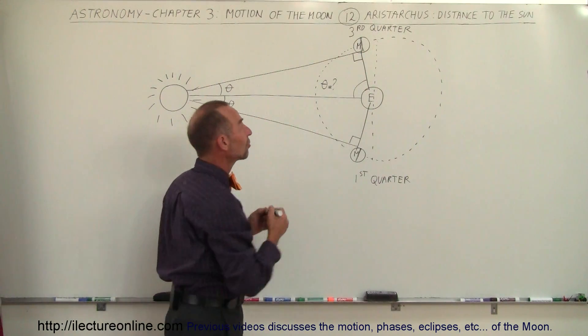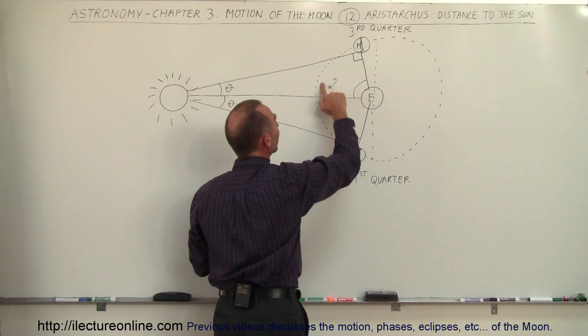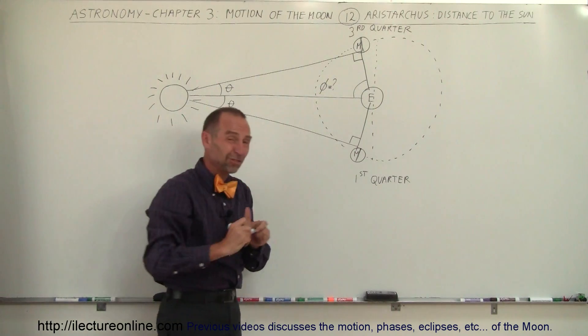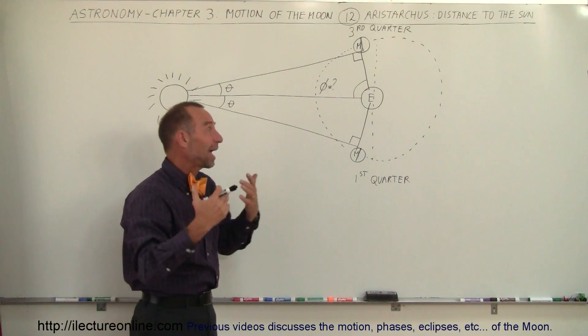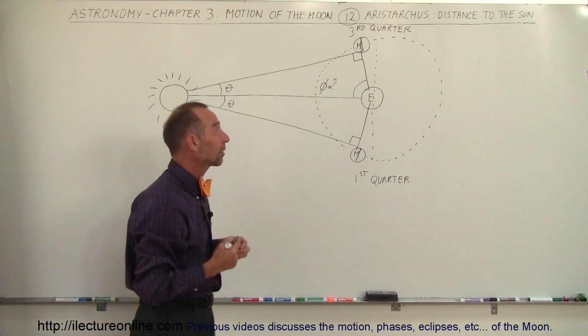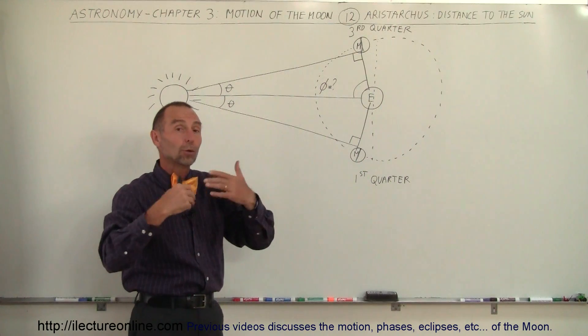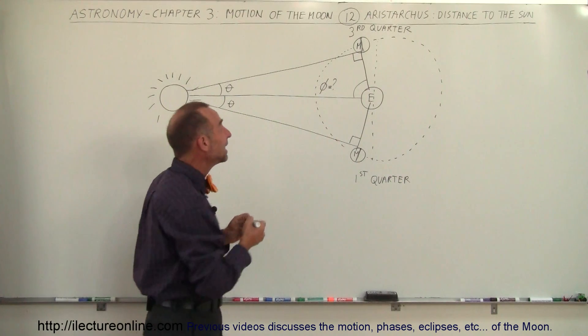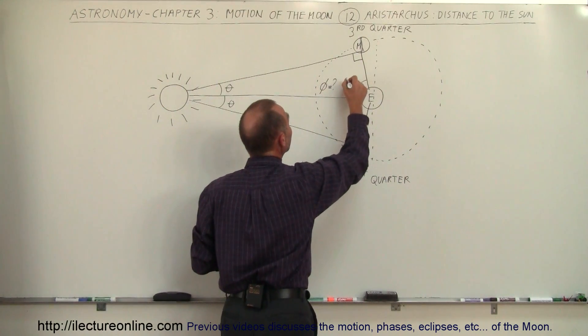What he tried to do is he tried to figure out what this angle is, and let me call that a different angle—I'll call that the angle phi. He tried to measure that, and of course he didn't have any modern tools like we have today, modern telescopes and very accurate apparatuses. So he did the best he could with what he had, and he estimated that this angle was about 87 degrees.